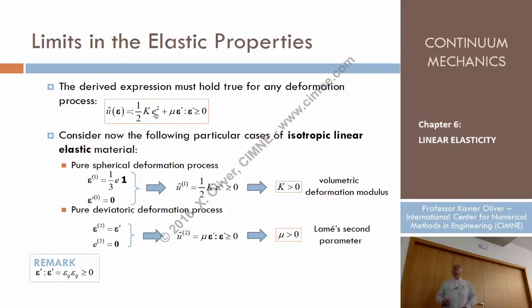Let's consider one case in which this part here is zero. One strain state that makes the deviatoric part of the strains zero. Then we'll have to find that one half K E squared is equal to zero.